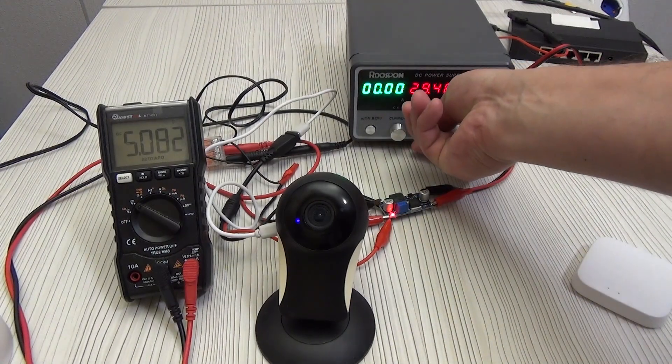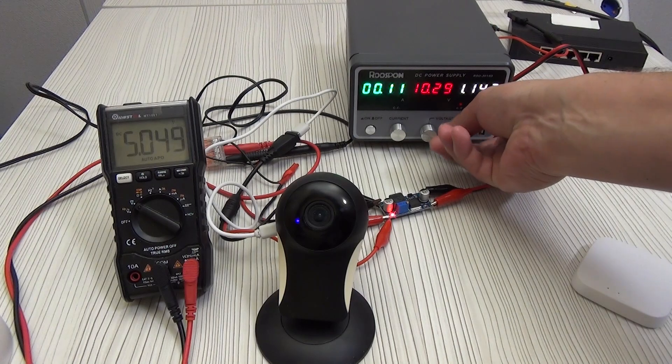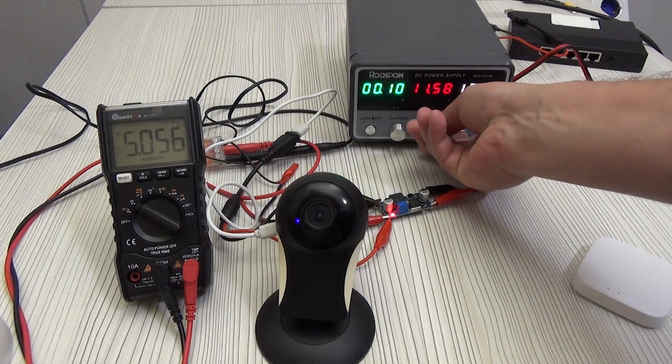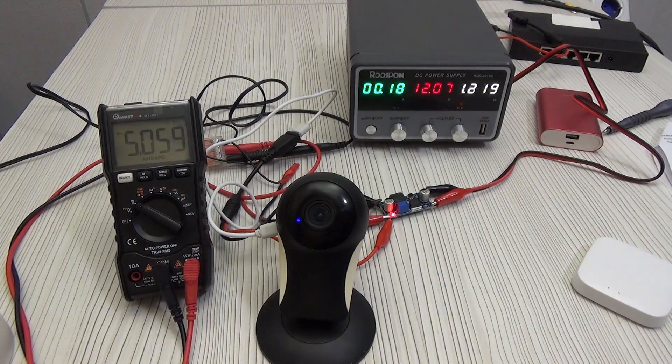Or, if necessary, connect a camera with a voltage of 5 volts, through a 12 volt power supply. Due to its compact size, it can be easily packed in heat shrink or even in the case of the required device.